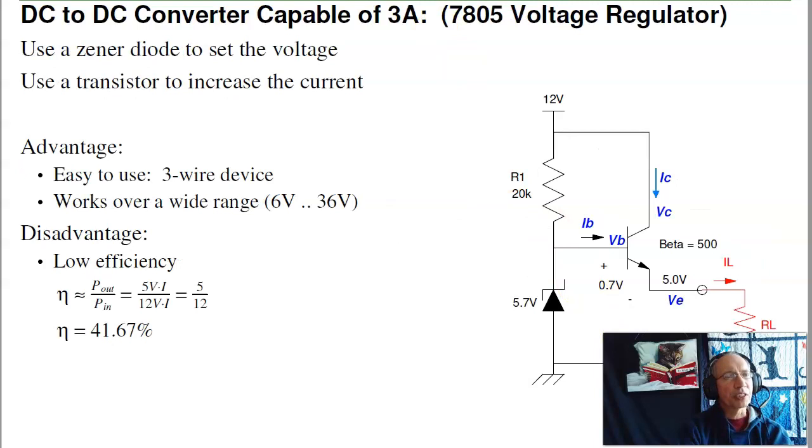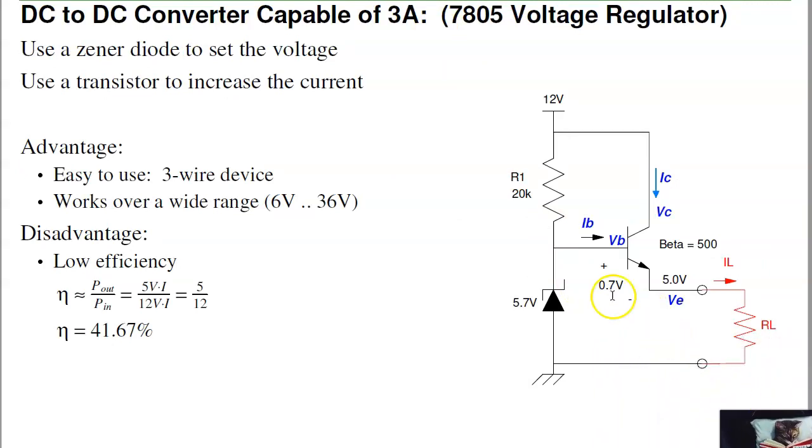Third circuit. This is a 7805 regulator. These are actually really nice. If you don't care about efficiency, this is a really easy way to convert one voltage to another. There's 7805, that's 5 volts out. There's also 7804, 4 volts out, 7806, 6 volts out. There's a whole slew of these. They're fairly cheap. They work extremely well. The efficiency is not great though.